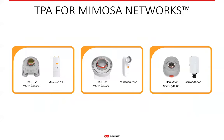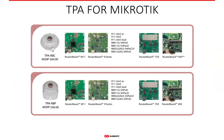For Mimosa radios, we have three adapters: the TPA C5C compatible with the Mimosa C5C; the TPA C5X compatible with the Mimosa C5X, which is a waveguide radio; and for the Mimosa A5X, a separate adapter called TPA A5X. For Microtik radios, we have two adapters: the TPA RBP with a plastic body, and the TPA RBC with a full metal body that offers better protection from changing weather and surrounding noise. Both are compatible with RouterBoard 4, 7, and 9 series, as well as the M11.